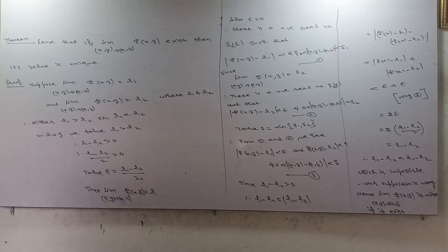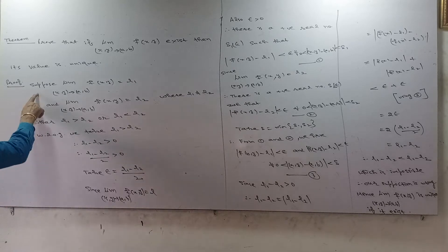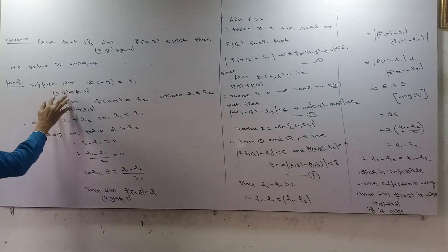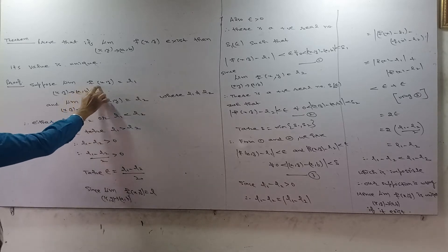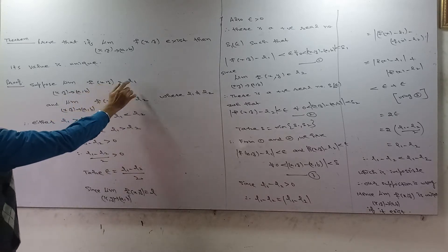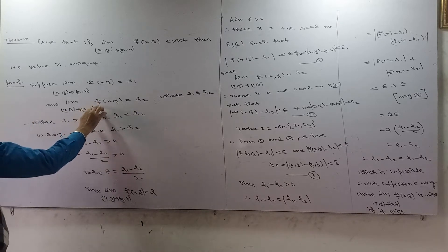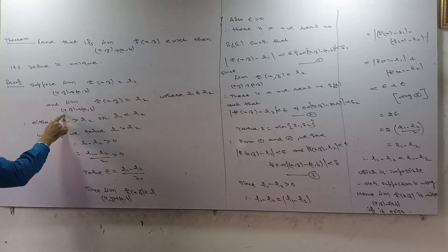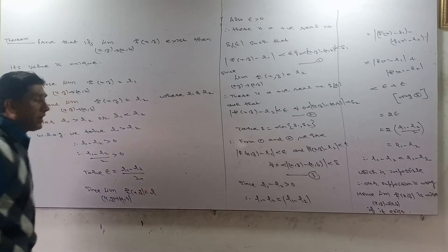We have to prove that the limit value is unique. We suppose that the limit value is not unique. We suppose that limit as (x, y) approaches (a, b) of f(x, y) is equal to L1, and the limit of function f is equal to L2 when (x, y) approaches (a, b), where L1 is not equal to L2.